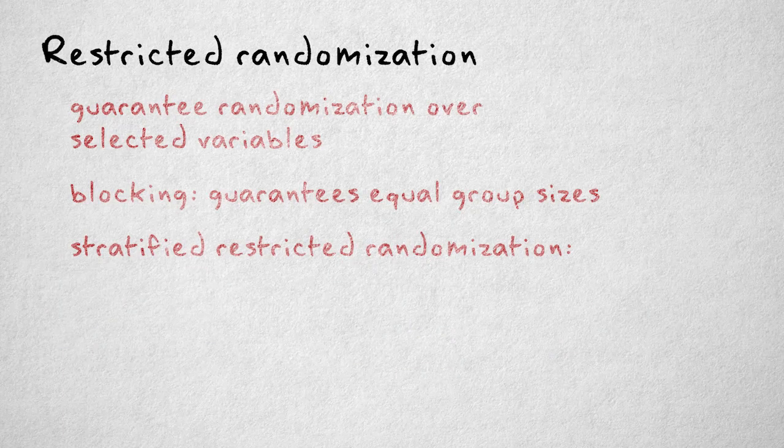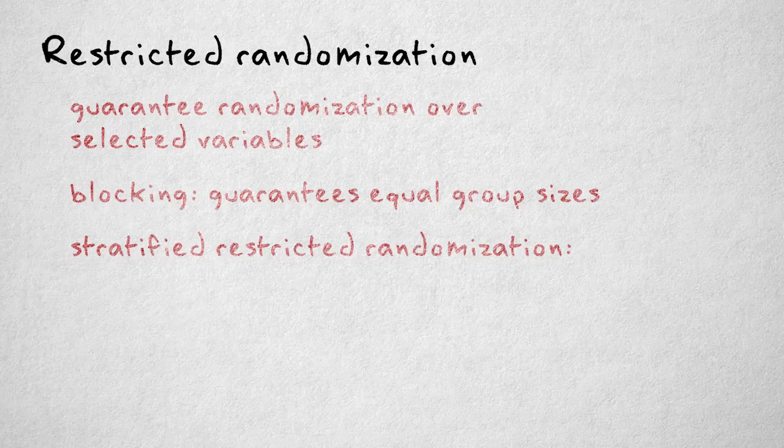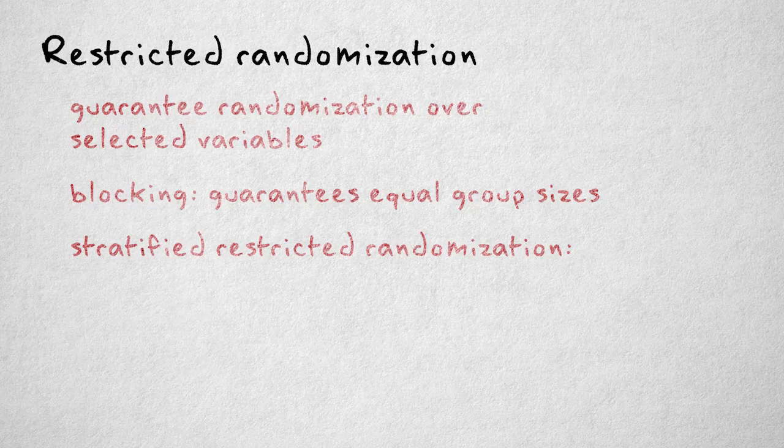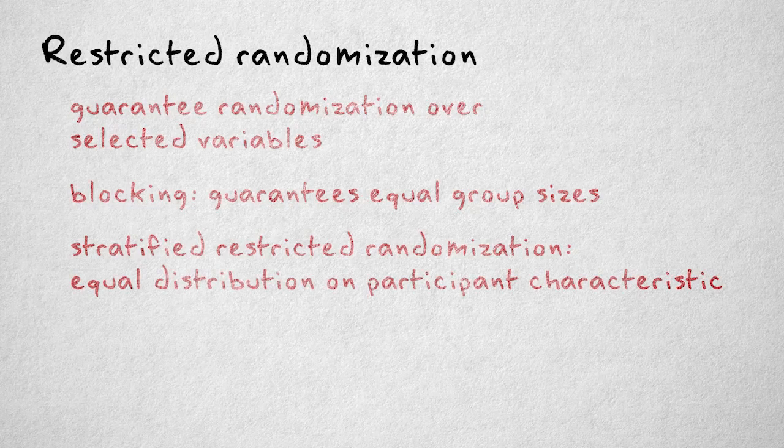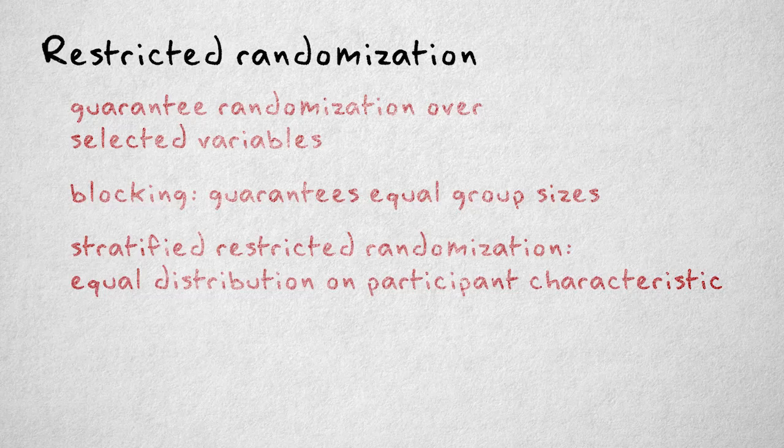In stratified restricted random assignment, we use the blocks to ensure not just equal numbers, but also equal representation of a specific subject characteristic. For example, equal numbers of boys and girls in each group.